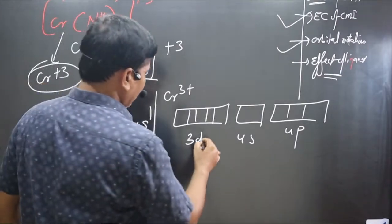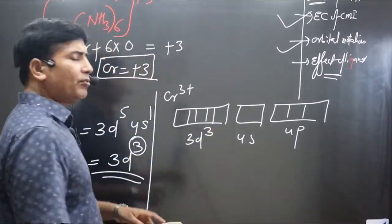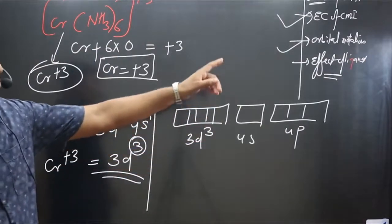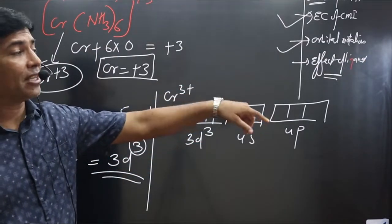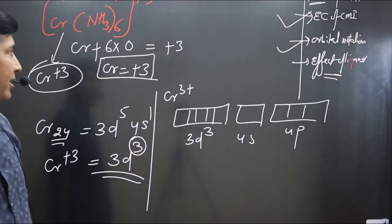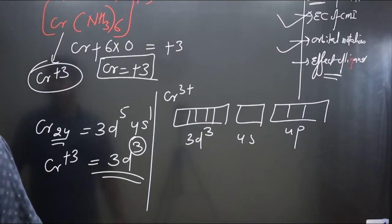In d orbital, how many electrons are there? Three electrons. Before filling these electrons in these orbitals, you must consider the effect of ligand, whether strong field ligand or weak field ligand is there. In the complex, you can see ammonia molecule is there.